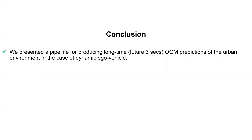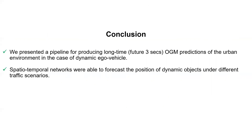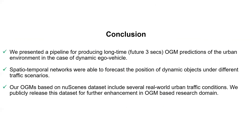In conclusion, we present a pipeline for producing long-term occupancy grid predictions of the urban environment in the case of dynamic scenes. Spatial-temporal networks were able to forecast the position of dynamic objects under different traffic scenarios. Our occupancy grid maps are based on the nuScenes dataset and include several real-world urban traffic conditions. We publicly released this dataset and project for further enhancements in occupancy grid maps.